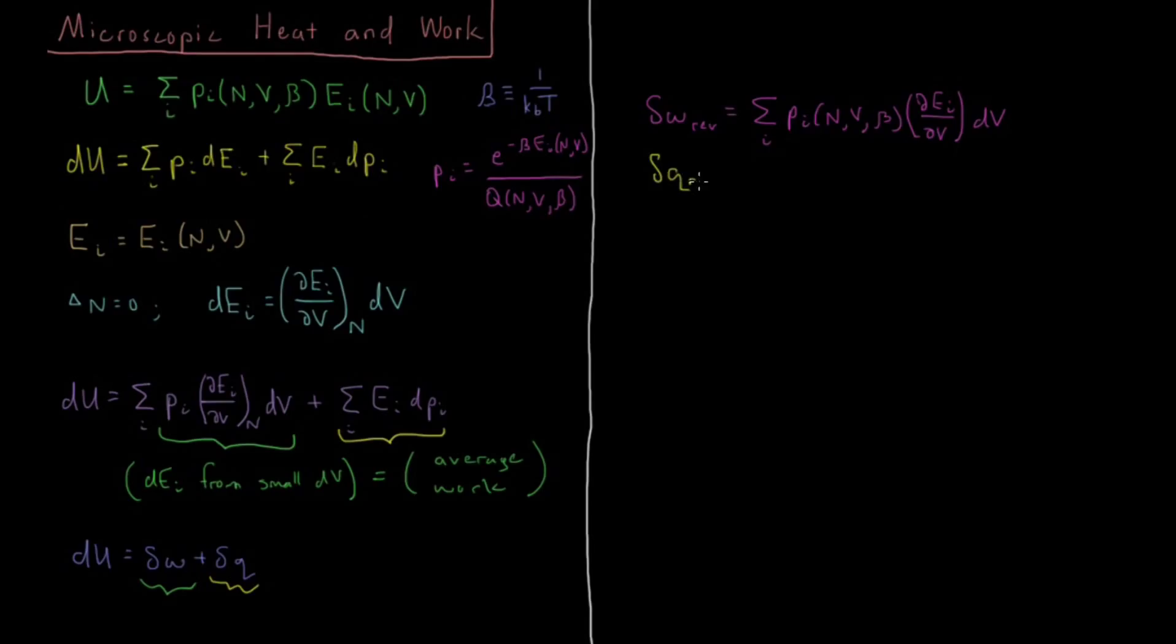So our reversible heat, whereas work was the change in the energy levels from changing the volume, heat is going to be keeping the energy levels the same but changing the probabilities. So that's kind of neat. We have two different sources there. We have work, which comes from changing the energy levels and not the probabilities. And we have heat, which comes from changing the probabilities and not the energy levels.